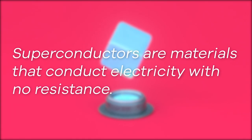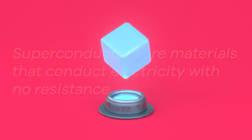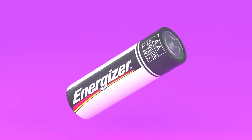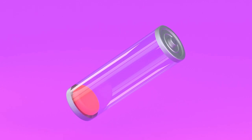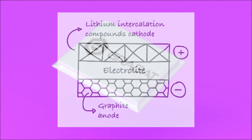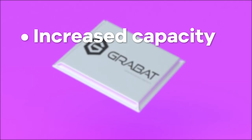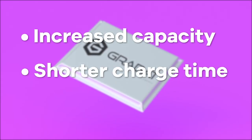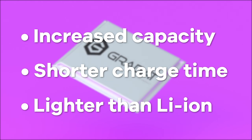For rechargeable batteries, we can expect to see improved battery capacity and reduced charge rates. GraBat is producing batteries with graphene polymer cells that have increased capacity, shorter charge times and are lighter than their lithium-ion counterparts.